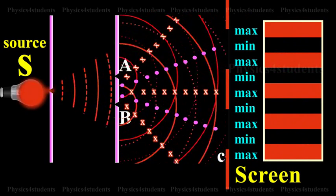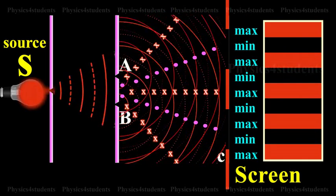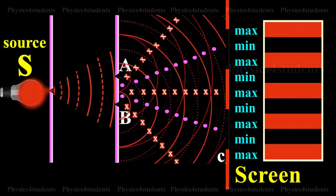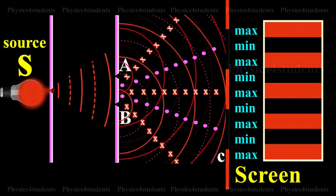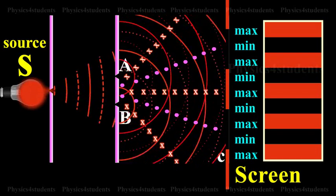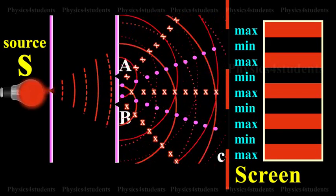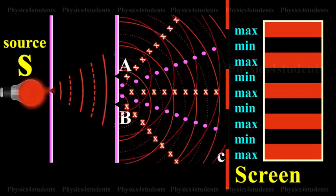The crest of the wave trains are shown by thick continuous lines and troughs are shown by broken lines. At points where the crest of one wave meets the crest of the other wave or the trough of one wave meets the trough of the other wave, the waves are in phase, the displacement is maximum and these points appear bright. These points are marked by crosses.